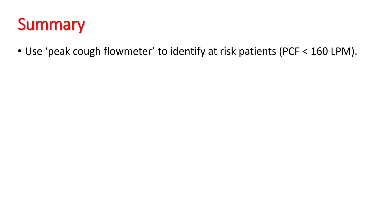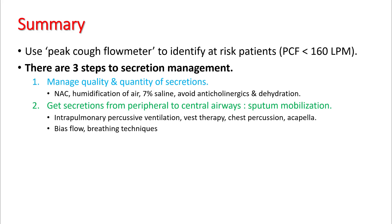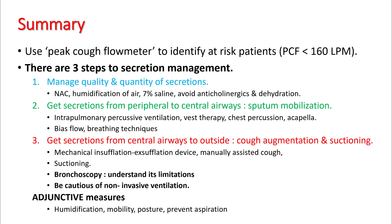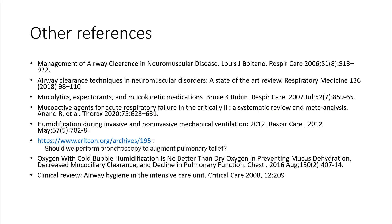In summary, use a peak cough flow meter to identify patients at risk. There are three steps to secretion management: first, managing quality and quantity of secretions; second, getting secretions from peripheral to central airways using sputum mobilization; and third, getting secretions from central airways to outside using cough augmentation and suctioning. Understand what your patient needs — many patients will need a combination of all three techniques to handle their secretions. Thank you.